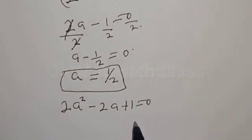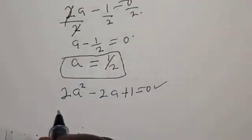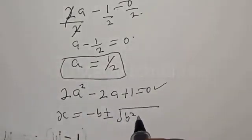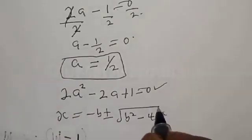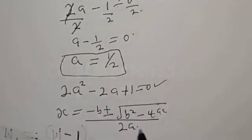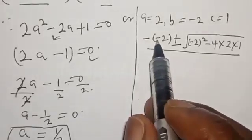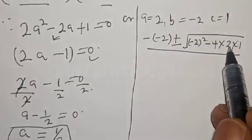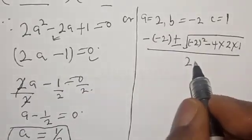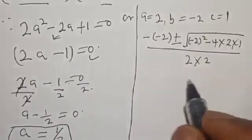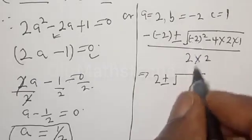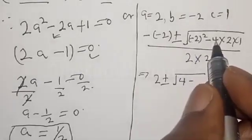From 2A squared minus 2A plus 1 equal to 0, this is a quadratic equation. We solve it using the quadratic formula: X equals minus B plus or minus square root of B squared minus 4AC, all over 2A. Here that gives minus of minus 2, plus or minus square root of minus 2 squared minus 4 multiplied by 2 multiplied by 1, all over 2 multiplied by 2.